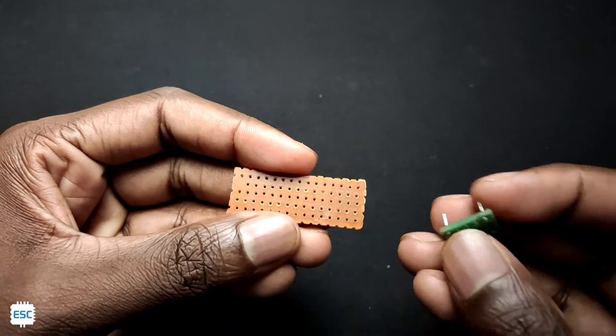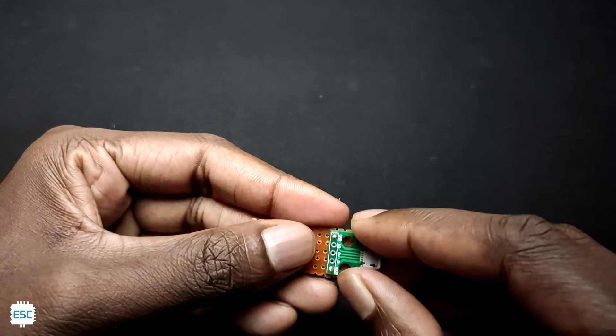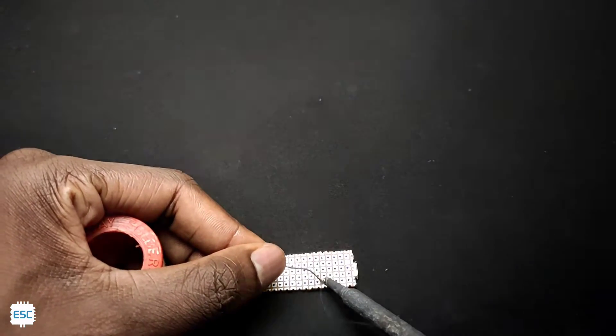First, I took a small piece of dot board. Then I placed the micro USB breakout board on the dot board. Then I soldered that into the dot board.